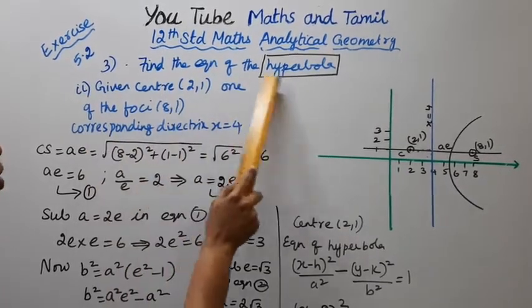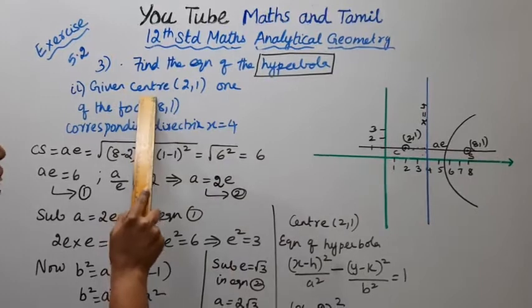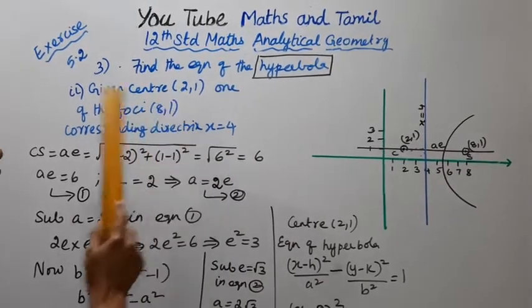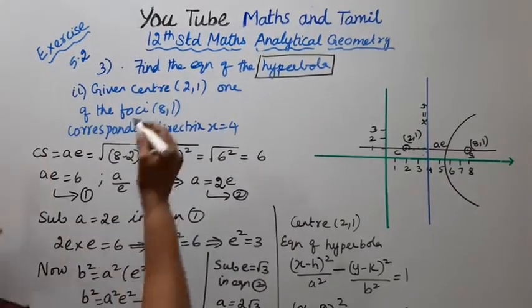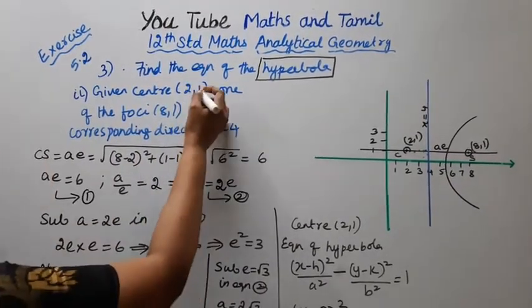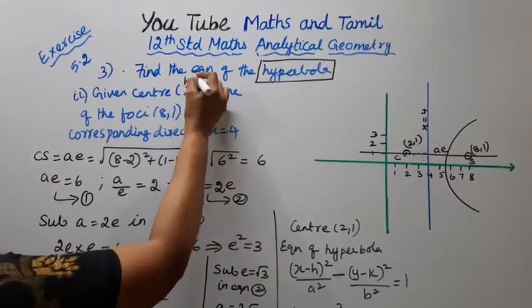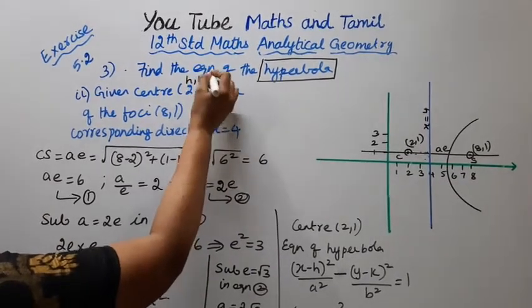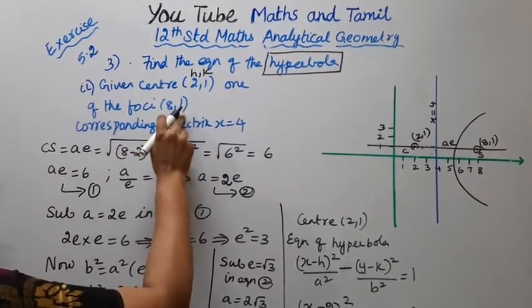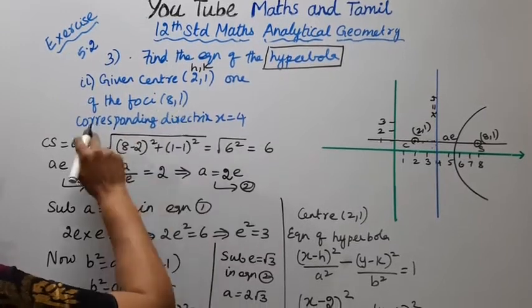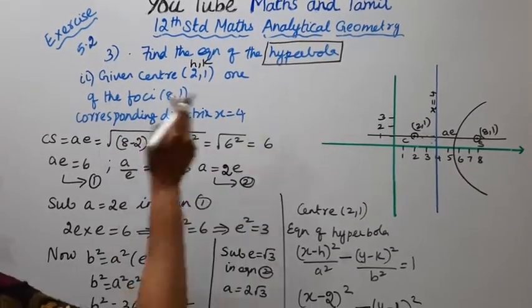Find the equation of hyperbola. Given: center (0,0), h,k on the focus (8,1), corresponding directrix is x equal to 4.